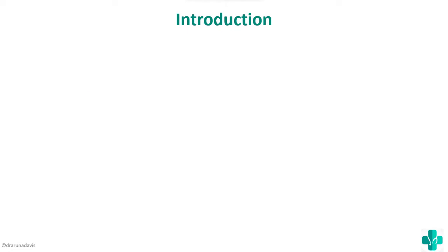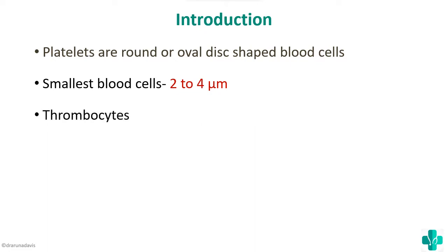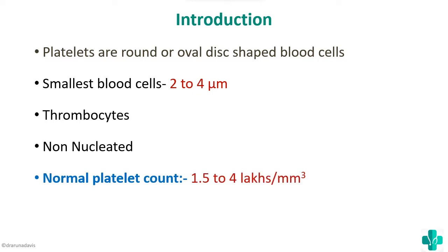We can start the answer with an introduction. Platelets are round or oval disc-shaped blood cells. They are the smallest blood cells, with a diameter of just 2 to 4 micrometers. They are otherwise called thrombocytes because thrombo means clot — these are the cells involved in clot formation. They are non-nucleated. The normal platelet count is 1.5 to 4 lakhs per millimeter cube, and they are formed mainly from cells called megakaryocytes, whose cytoplasm pinches off to form platelets.